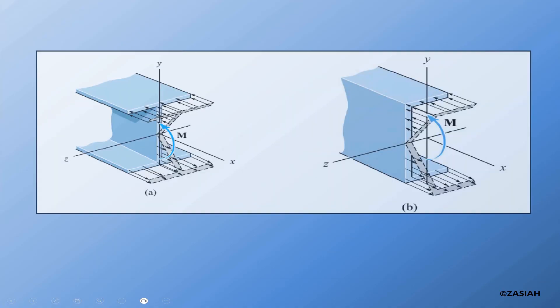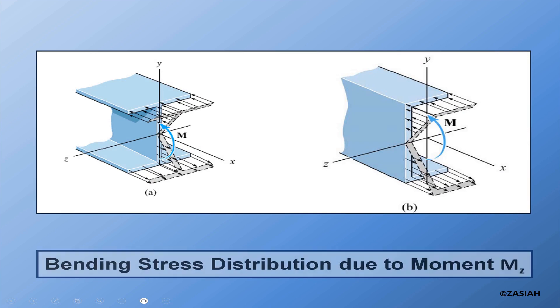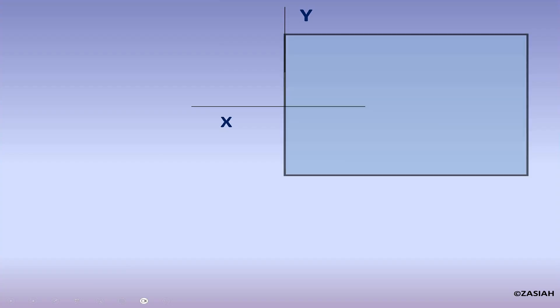Here we can see the bending stress distribution due to moment Mz for the I-section on the left and for the channel section on the right, and here we can see the 2D representation of the bending stress.